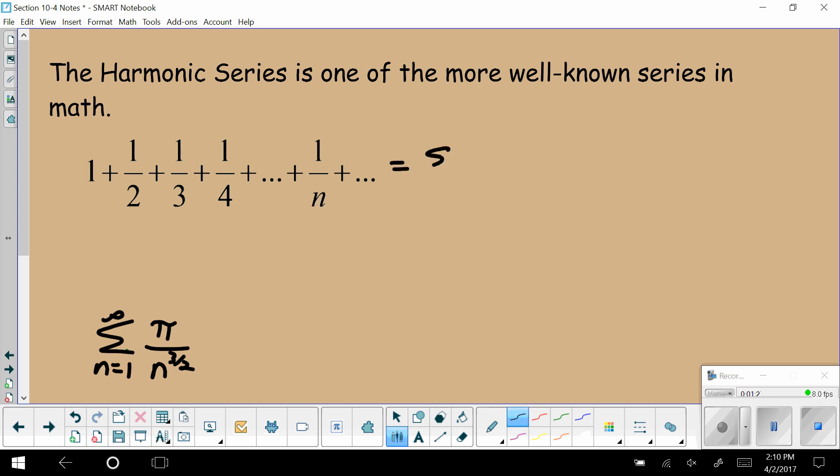Well, this is the infinite series where n equals 1 to infinity of 1 over n. As you can see, we do have a constant in the numerator. However, we have n to the first in the denominator, so our power is 1, and since our power is less than or equal to 1, this series diverges.